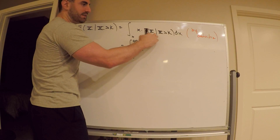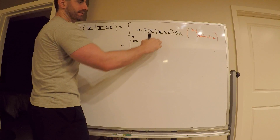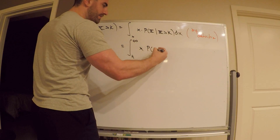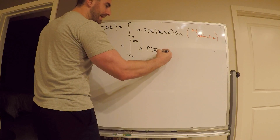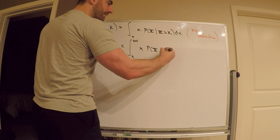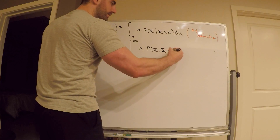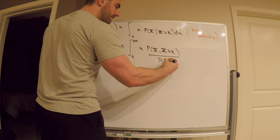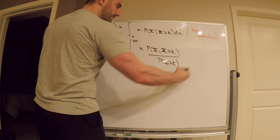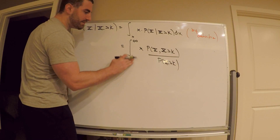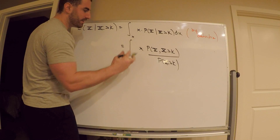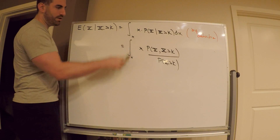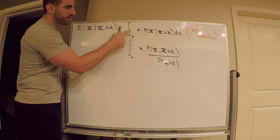What's the probability density function of a conditional probability? Just follow your nose here. It's the probability of x and x greater than k divided by probability x greater than k. You can keep this as x for right now. All I'm saying here is integrate over x.